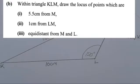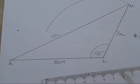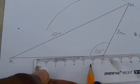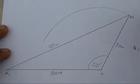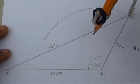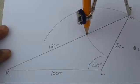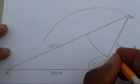Part B says: within triangle KLM, draw the locus of points which are 5.5 centimeters from M. Get your ruler and set your compass to 5.5 centimeters from zero. Place the compass point at M and make an arc just within the triangle — not outside. Label this arc B(i).